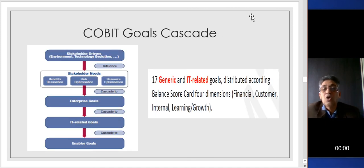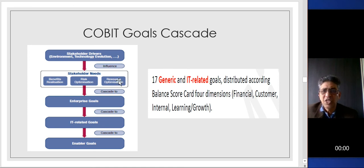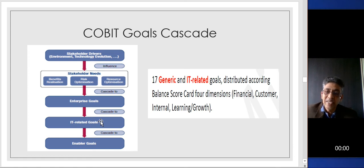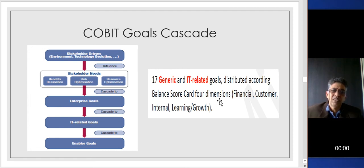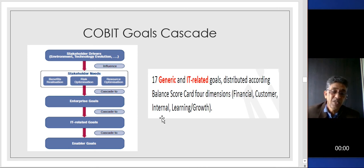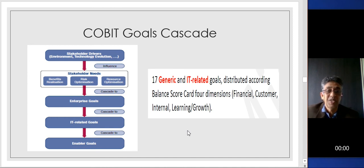COBIT 5 is all dependent on goals cascading. Stakeholders tell you something and should benefit from it. There is risk optimization and resource optimization to do, and then you go to the goals cascade. What is the goals cascade? You look at stakeholder needs, identify enterprise goals first, map them with IT-related goals, and then map IT-related goals with the enabler goals. There are 17 generic and IT-related goals distributed across the balanced scorecard's four dimensions: financial, customer, internal, and learning and growth. The balanced scorecard is presented to management and can be in the form of a matrix, graphs, or statistics.